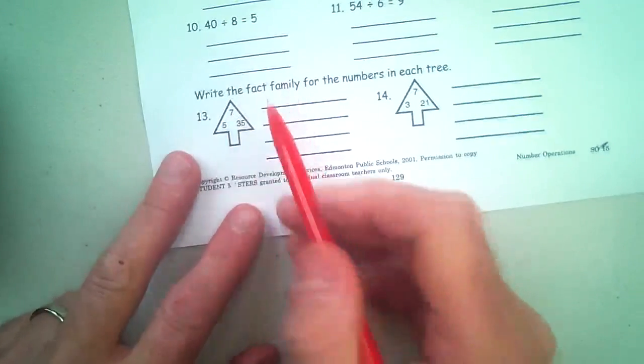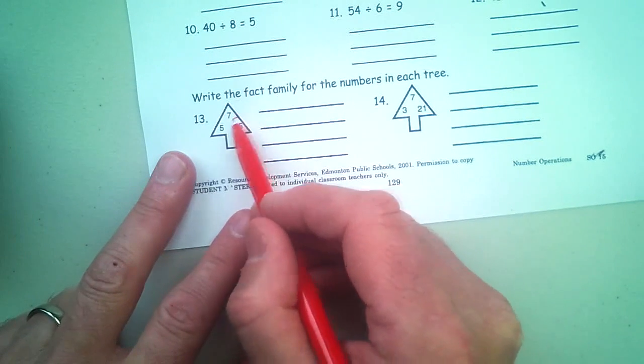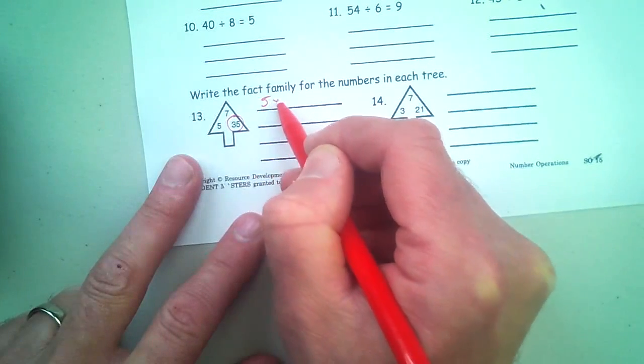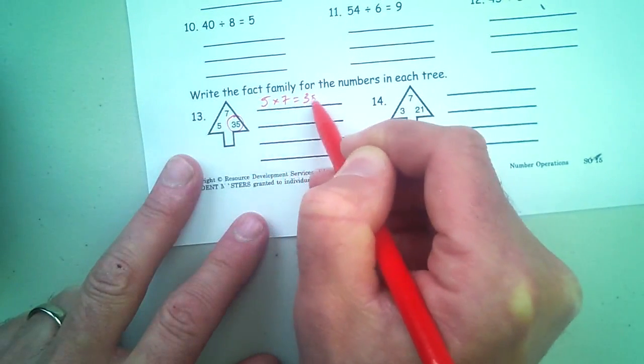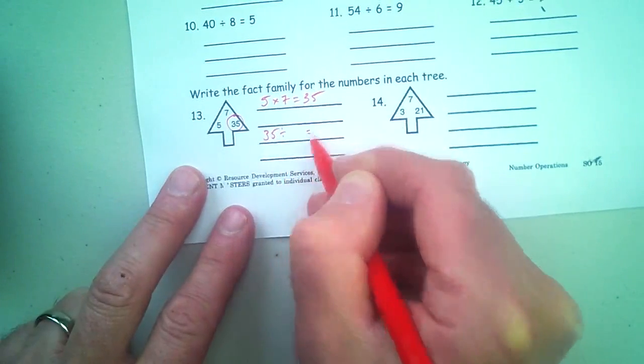And so you've got the three numbers now. And basically, you have to write the four statements. So obviously, the division ones will start with the 35. And then we'll do the first one together. And this one would be 35 divided by something, which will give you something.